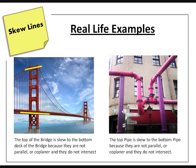The second real life example: the top pipe is skewed to the bottom pipe because they are not parallel or coplanar and they do not intersect.